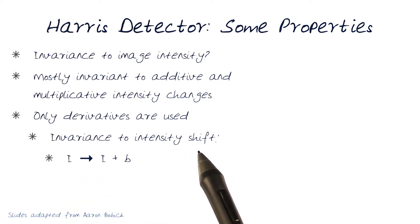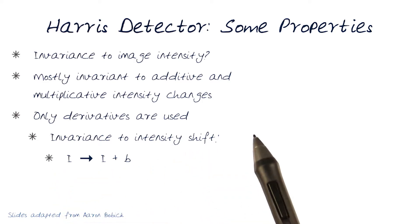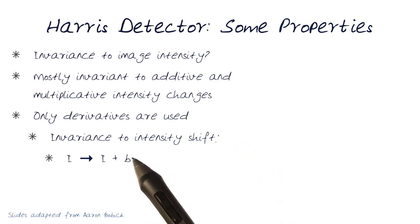In essence, what we're just repeating here is it would be invariance to any kind of intensity shift. If you add a constant, derivatives actually still won't care. And similarly, if there was a scale, the derivatives would not be impacted, and all of that actually still same results would appear.